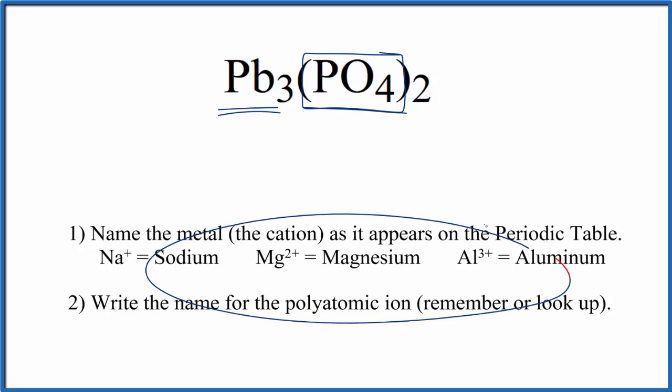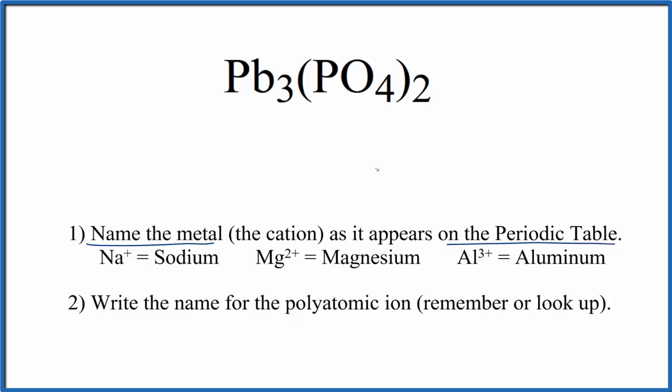We can use these rules to write the name for Pb₃(PO₄)₂. First, we write the name for the metal as it appears on the periodic table. Pb, that's lead. Next, we're going to write the name for the polyatomic ion.